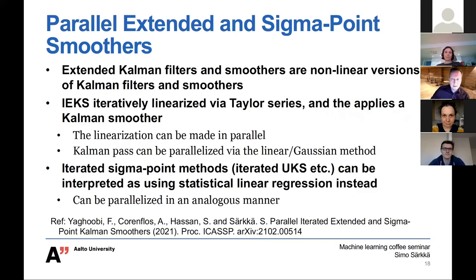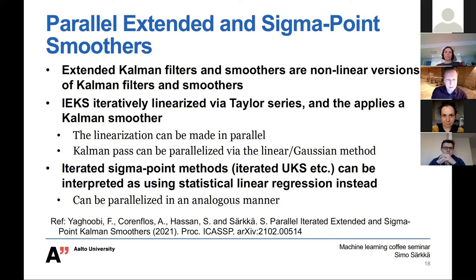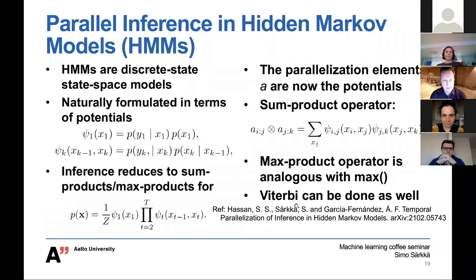You can also extend this to the nonlinear case. Extended Kalman filters and smoothers linearize the system and then apply a Kalman filter. The linearization is a local operation, so it's trivially parallelizable. Then the Kalman pass or smoothing pass can be parallelized using the linear Gaussian result. The same idea can also be applied to sigma-point-based methods, which can be interpreted as a certain kind of linearization — there's a paper on that topic appearing in ICASSP proceedings.